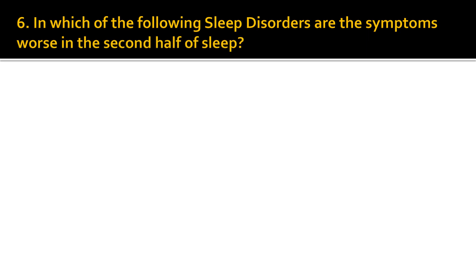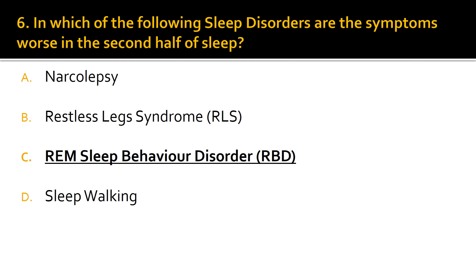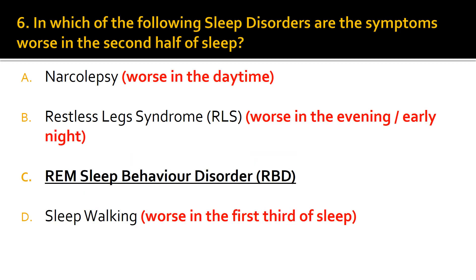Question 6. In which of the following sleep disorders are the symptoms worse in the second half of sleep? The correct answer is C: REM sleep behavior disorder. A is incorrect because the symptoms of narcolepsy are worse in the daytime. B is incorrect because the symptoms of RLS are worse in the evening or early night, and D is incorrect because sleepwalking is worse in the first third of sleep.